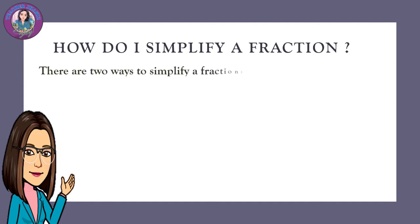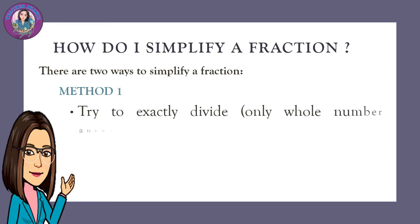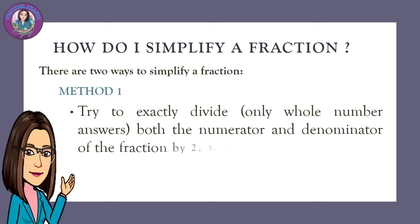There are two ways to simplify a fraction. Method 1: Try to exactly divide both the numerator and denominator of the fraction by 2, 3, 5, 7, etc., until we can't go any further.